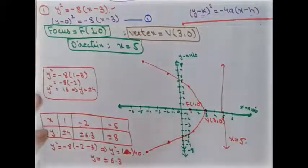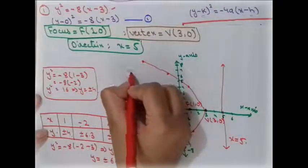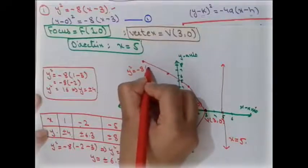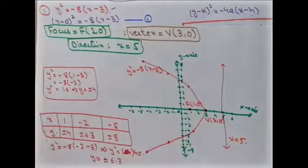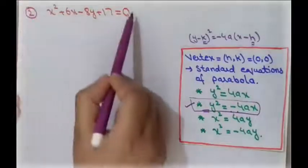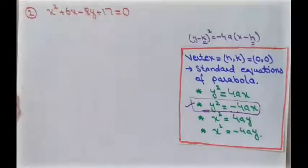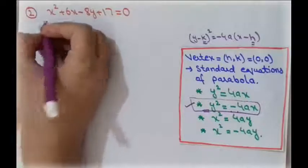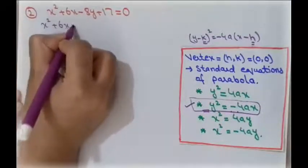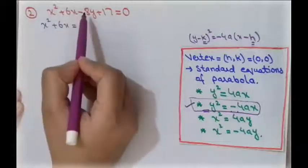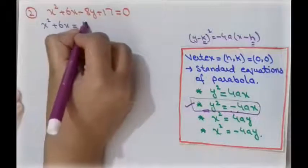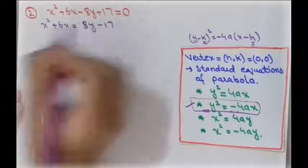So this is the parabola of the equation y² = −8(x − 3). Now let us take one more example. We have a new given equation. We take the x-terms on one side: x² + 6x = 8y − 17.